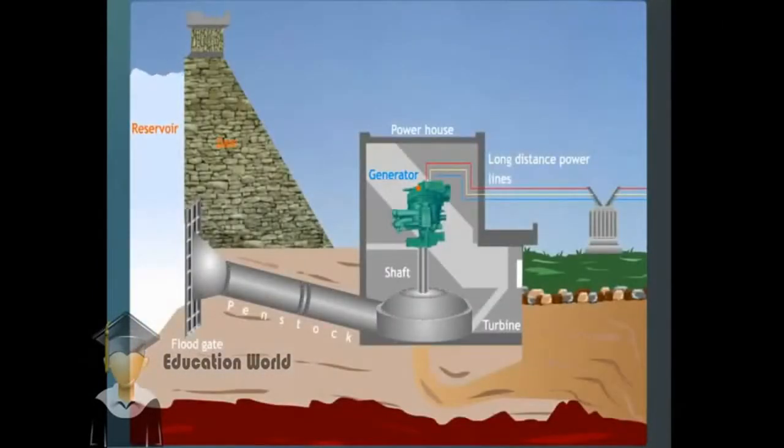A dam is built across a large river to hold back the river water and raise its level to form a reservoir. At the bottom of the dam, there is a floodgate.